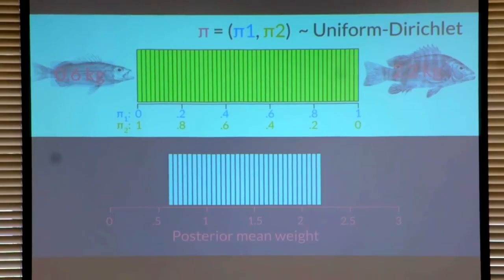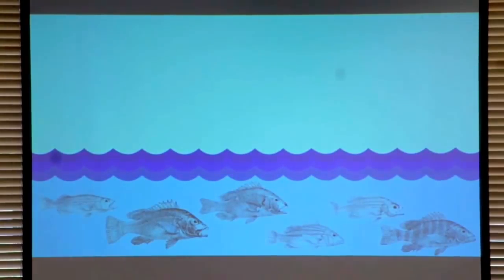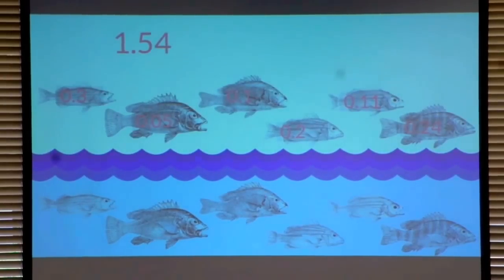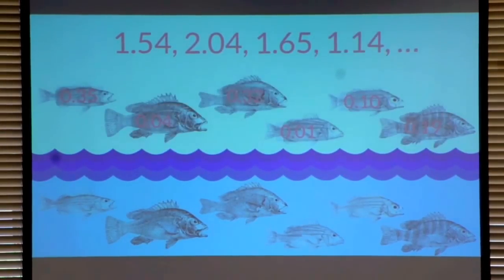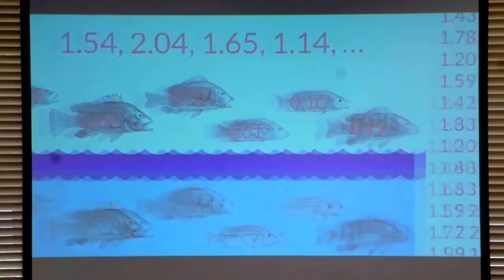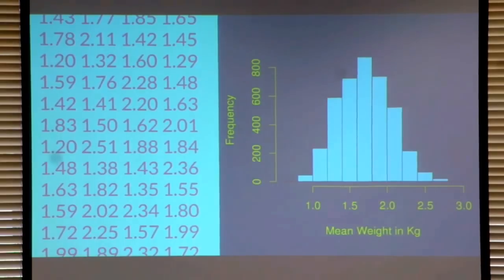So this was the Bayesian bootstrap. Now let's apply this to our original fish data set. Instead of simulating redoing the data collection, we draw probability weights from this uniform distribution. For each set of probability weights, we calculate the corresponding population mean, and we do this many, many times — say 10,000 times. What we're left with is a long list of numbers representing the probability distribution over likely population means. We can plot this as a histogram and chop off the tails to calculate a 95% credible interval.